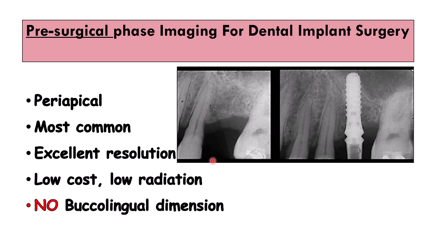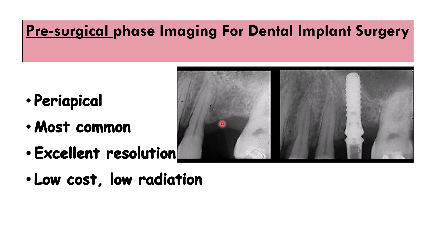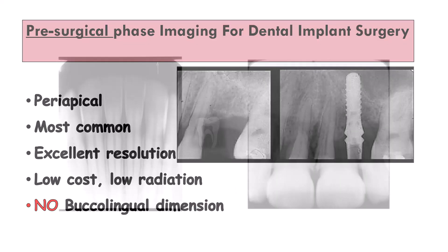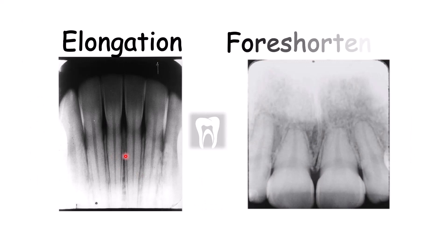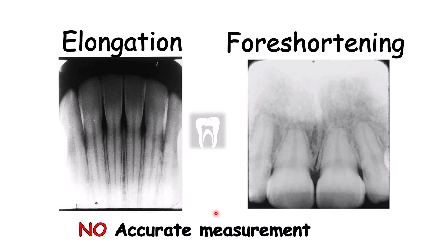The periapical radiograph can help evaluate bone healing at the dental site, any retained roots, or periapical pathology. The anatomic coverage for seeing anatomical structures is less than a panoramic radiograph. It can show the mesial-distal dimension and the vertical dimension, or vertical distance to adjacent anatomical borders. However, it is a two-dimensional image and does not provide information on the buccal-lingual dimension. Also, different tube angulations can cause elongation and foreshortening of structures, so measurements for the dental implant are not accurate.